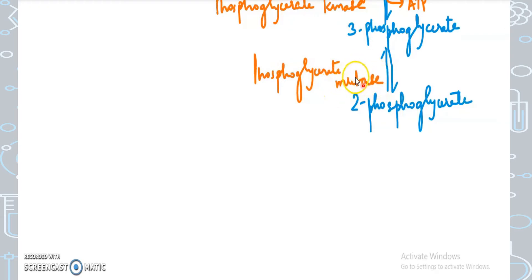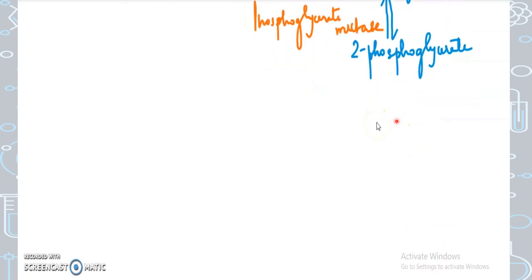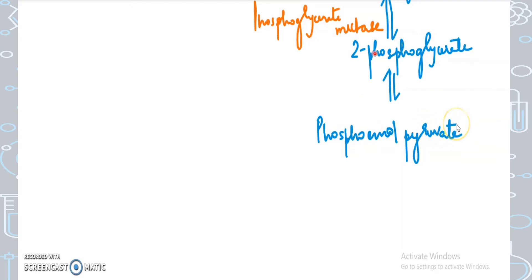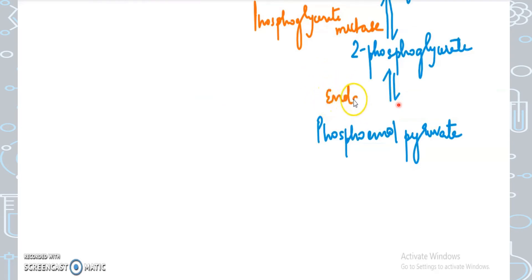In the next step, 2-phosphoglycerate is converted into phosphoenolpyruvate. What happens here is dehydration — 2-phosphoglycerate loses a water molecule to form phosphoenolpyruvate. An enolic phosphate group is formed, and enol groups or enolic phosphate groups are high-energy compounds. The enzyme catalyzing this reaction is enolase.